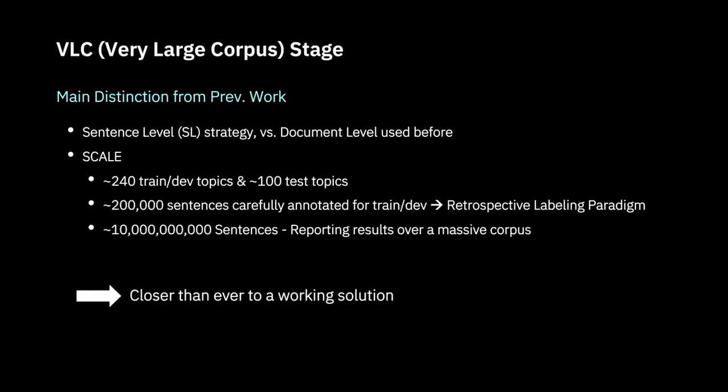There are three main differences between this new system and the previous work. First, instead of document-level information retrieval, we switched to sentence-level information retrieval. Second is the scale — in the Wikipedia stage we only had around 60 motions, but now we scaled up to 240 train and dev topics and 100 test topics. During model development, researchers don't have access to the testing topics.